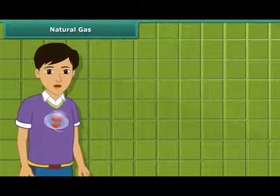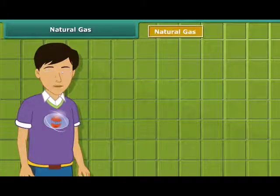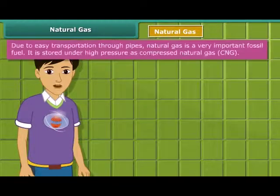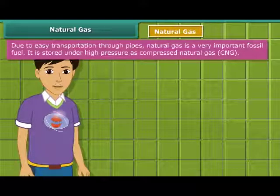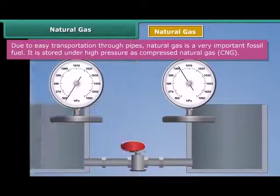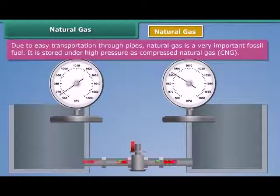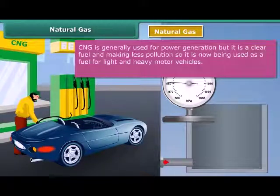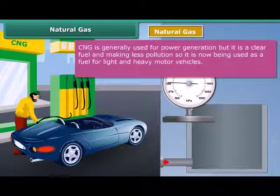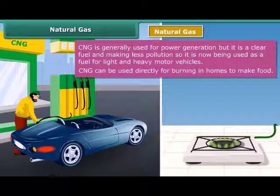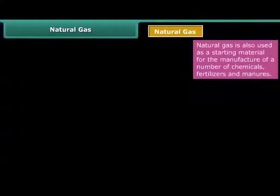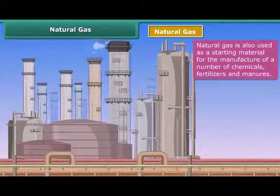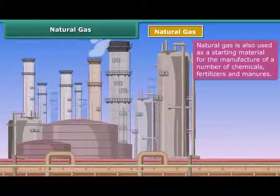Now let's move on to our next exhaustible natural resource — natural gas, also known as compressed natural gas or CNG. It is stored under high pressure as compressed natural gas. CNG is generally used for power generation, but due to being less polluting, it is being used as a fuel for vehicles. It is also used for cooking purposes and as a base material for the manufacture of a number of chemicals and fertilizers.